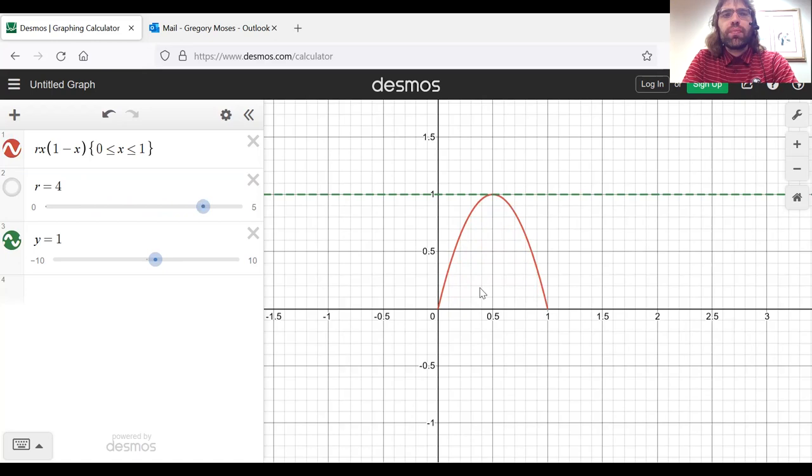So as long as r is between zero and four, values in the interval from zero to one are mapped to the interval from zero to one.